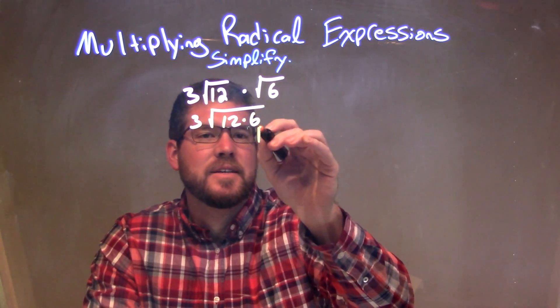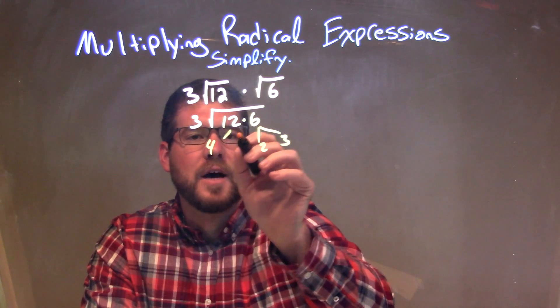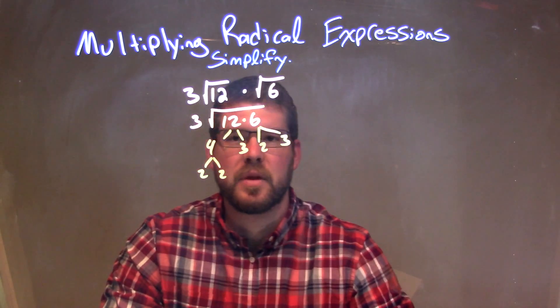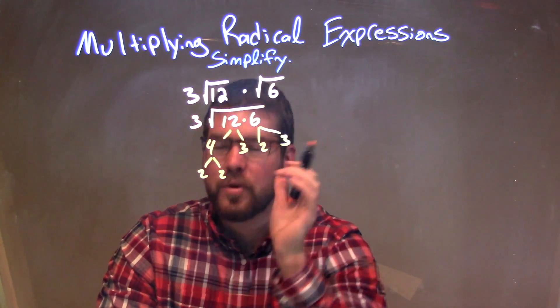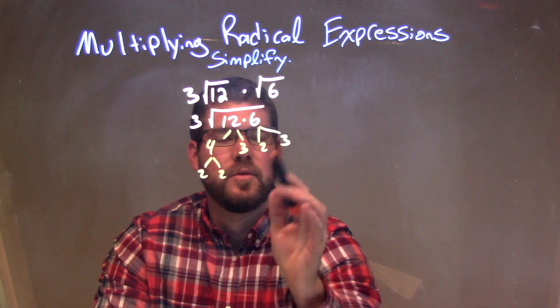6 is 2 times 3, and 12 is 4 times 3, and then 4 is 2 times 2. So 12 times 6, whatever that number came out to be, is the same thing as 2 times 2 times 3 times 2 times 3.